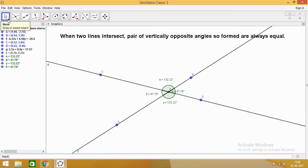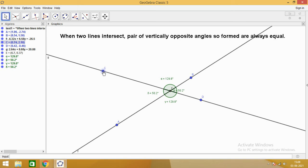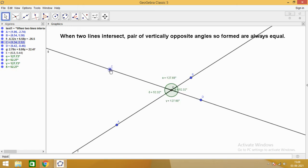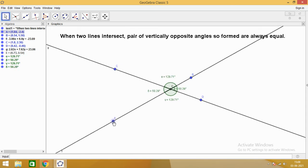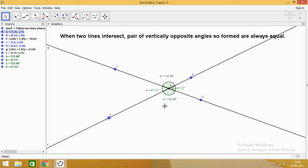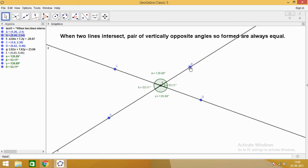So what we are going to do is we will be using this move tool and try to see the variation. If we change the angles, you observe carefully every time we notice that vertically opposite angles, they remain equal. Isn't it interesting? Yes.